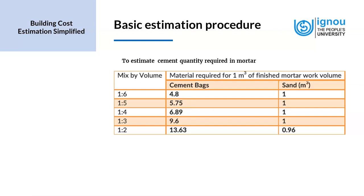Now to estimate the quantity required in mortar — we have cement and sand in cement mortar. The mix is given as 1:6, 1:5, 1:4, 1:3 and 1:2, representing the material required for 1 cubic meter of finished mortar work by volume. For 1:6, we need 4.8 cement bags and 1 cubic meter of sand. For 1:5, it is 5.75 cement bags and 1 cubic meter of sand. For 1:4, it is 6.89 cement bags and 1 cubic meter of sand. For 1:3, it is 9.6 cement bags and 1 cubic meter of sand. For 1:2, it is 13.63 cement bags and 0.96 cubic meters of sand.